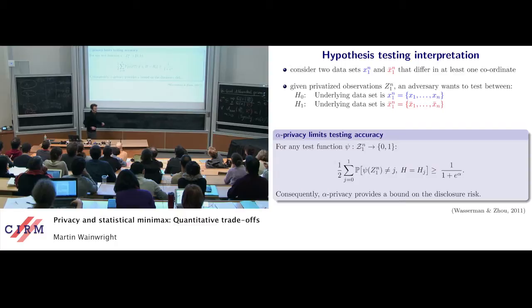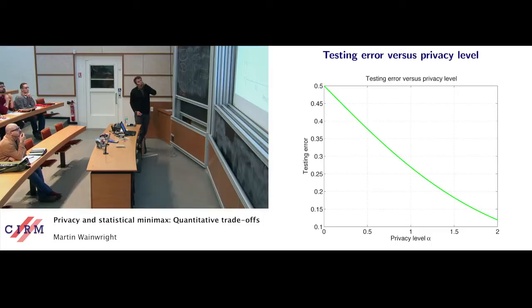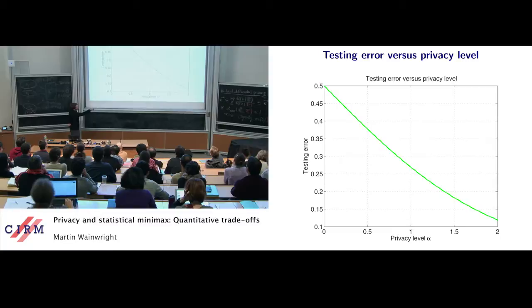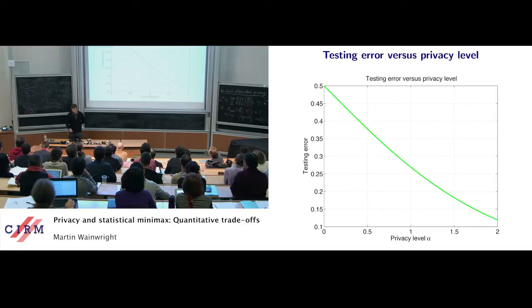Why does that make sense? If alpha is zero, you have perfect privacy — no information from the likelihood ratio — and you get 1 over (1+1) = 1/2, essentially flipping a coin. If you plot the function 1 over (1 + e^alpha), this is why we're mainly interested in alphas between zero and one: we want to keep this testing error up near random guessing. That's our notion of privacy. Statisticians would call this disclosure risk — whether an adversary can tell the status of one individual. It's a probabilistic guarantee, not a cryptographic one.